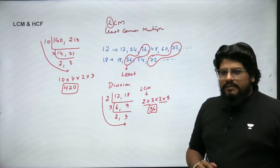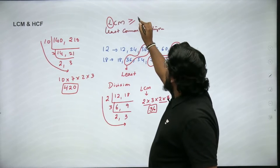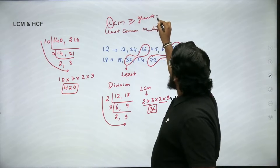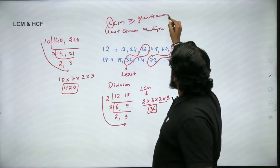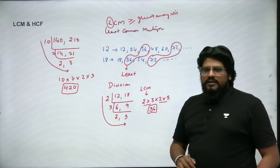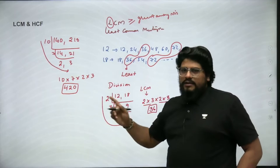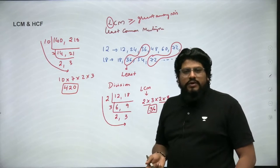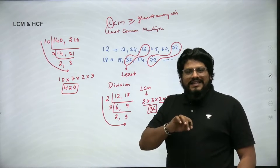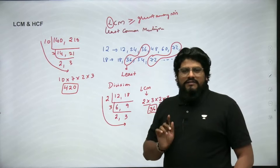One thing to remember about LCM: it will always be greater than or equal to the greatest among the given numbers. For 12 and 18, LCM must be greater than or equal to 18. For 140 and 210, LCM must be greater than or equal to 210. So even though it's called the 'least' common multiple, LCM is actually a larger number compared to the given numbers.